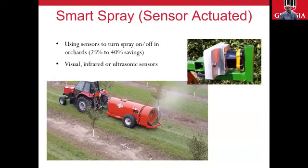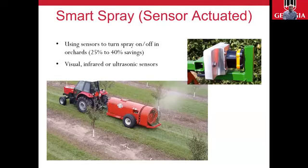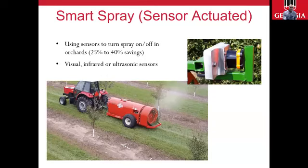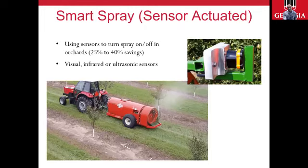A step beyond section control is individual nozzle control, where instead of turning sections on and off, we're being more precise by turning individual nozzles on and off — each nozzle acts as a section on the boom. Instead of using flow control or section control valves, we're using solenoids on each nozzle to turn it on and off as needed. This technology is more prevalent on boom sprayers but is also a bit expensive. For tree or orchard sprayers, there's what we call smart spray — using visual, infrared, or ultrasonic sensors to turn the spray on and off as the sprayer approaches vegetation, instead of having the spray constantly on.